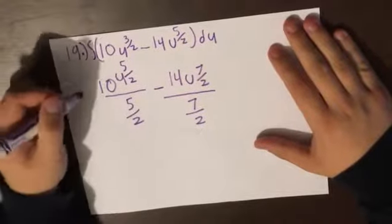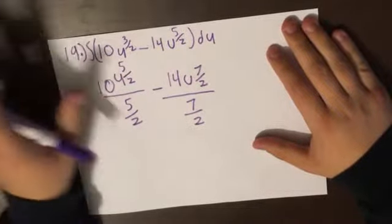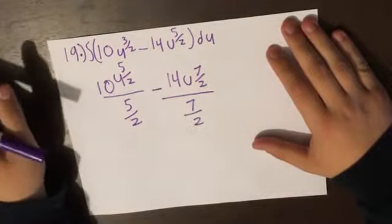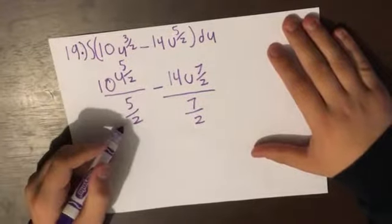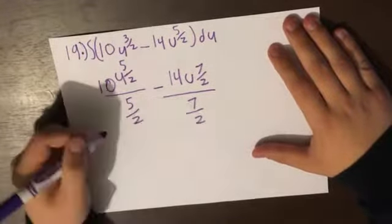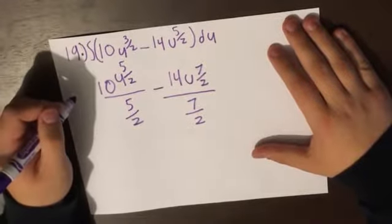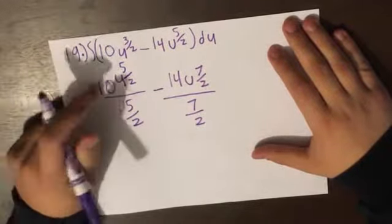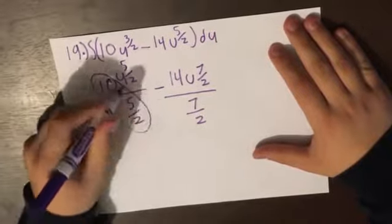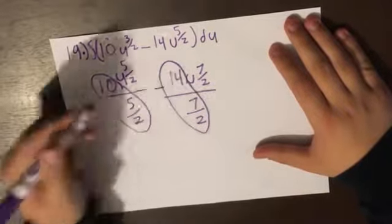Now, in order to find the simplest form of this, you don't want 5/2 and 7/2 in the bottom. What you're going to do is bring them up by multiplying by the reciprocal. So these two are going to go together, and then these two are going to go together.